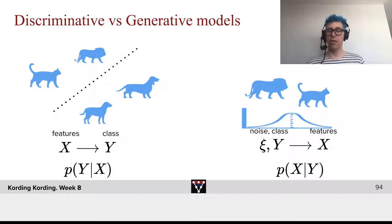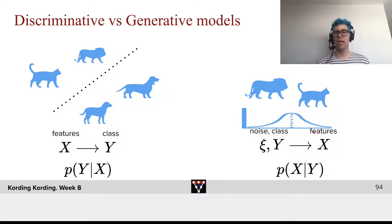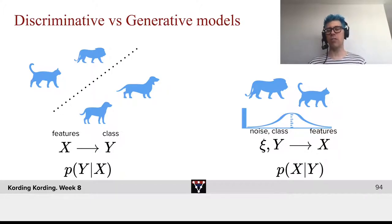There are lots of different cats, and ideally a generative model should produce every image that is possible with the corresponding probability, which we sketch here by a Gaussian. Obviously, cats do not fall into neat, simple Gaussian distributions — the distributions we have in the world are very complicated.